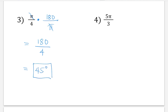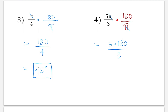One last time — we're going to change 5 pi over 3 radians into degrees. Multiply the given with 180 over pi, cancel out the pi, and then multiply across: 5 times 180 over 3. 5 times 180 gives us 900, and then we divide by 3 — that would be 300 degrees.